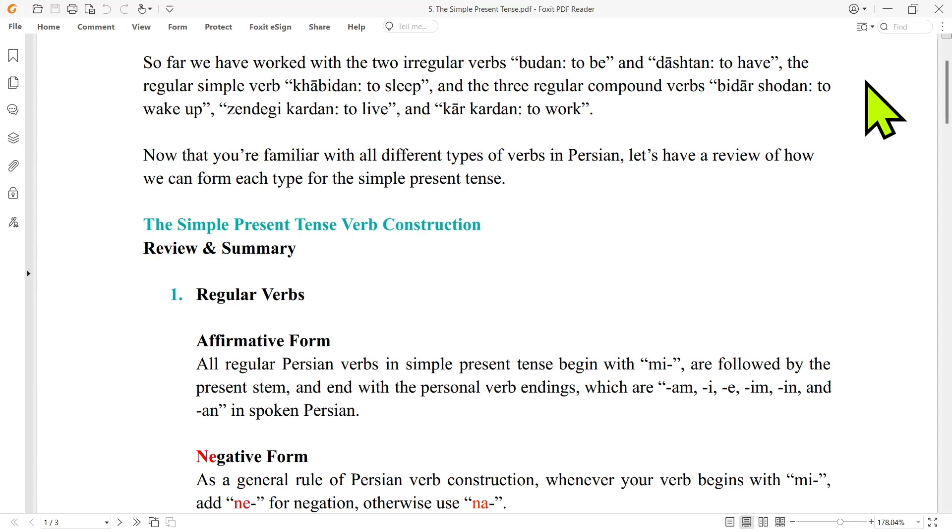Now that you are familiar with all different types of verbs in Persian, let's have a review of how we can form each type for the simple present tense.